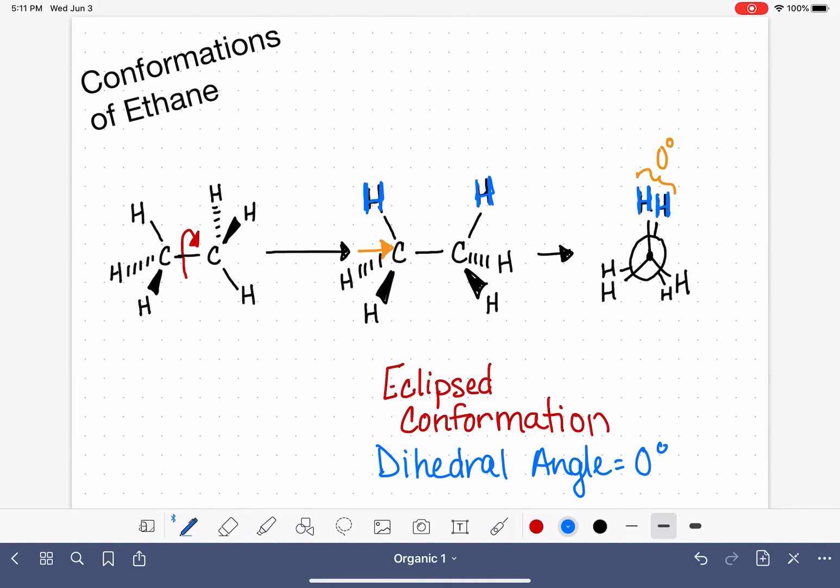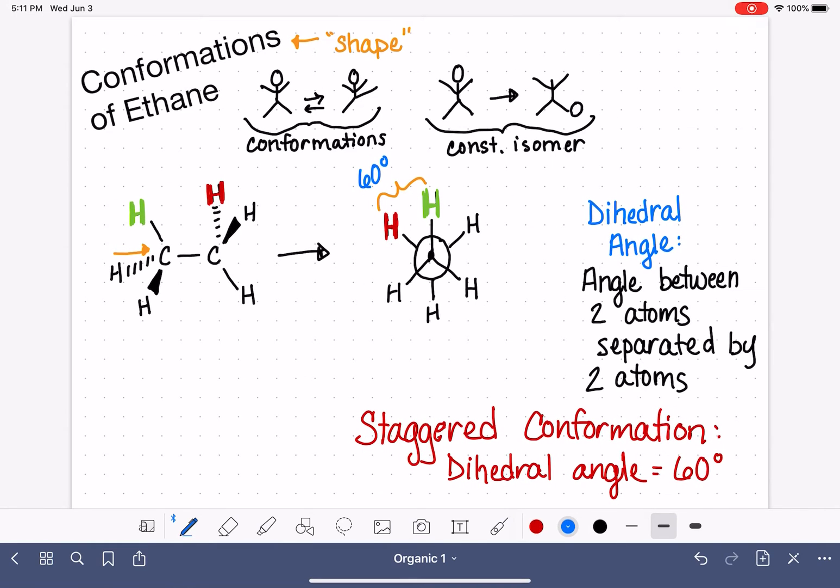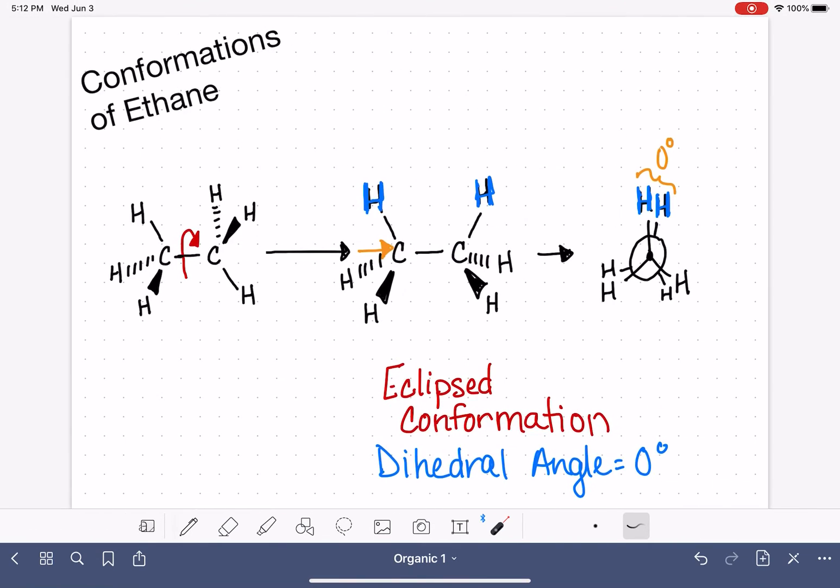Let's go back and look at a picture of the staggered conformation. The staggered conformation with a dihedral angle of 60 degrees. Now that you've seen the eclipsed conformation, the staggered name probably makes sense to you because in the staggered conformation, the hydrogens are staggered with respect to each other compared to the eclipsed conformation where they are stacked right on top of each other.